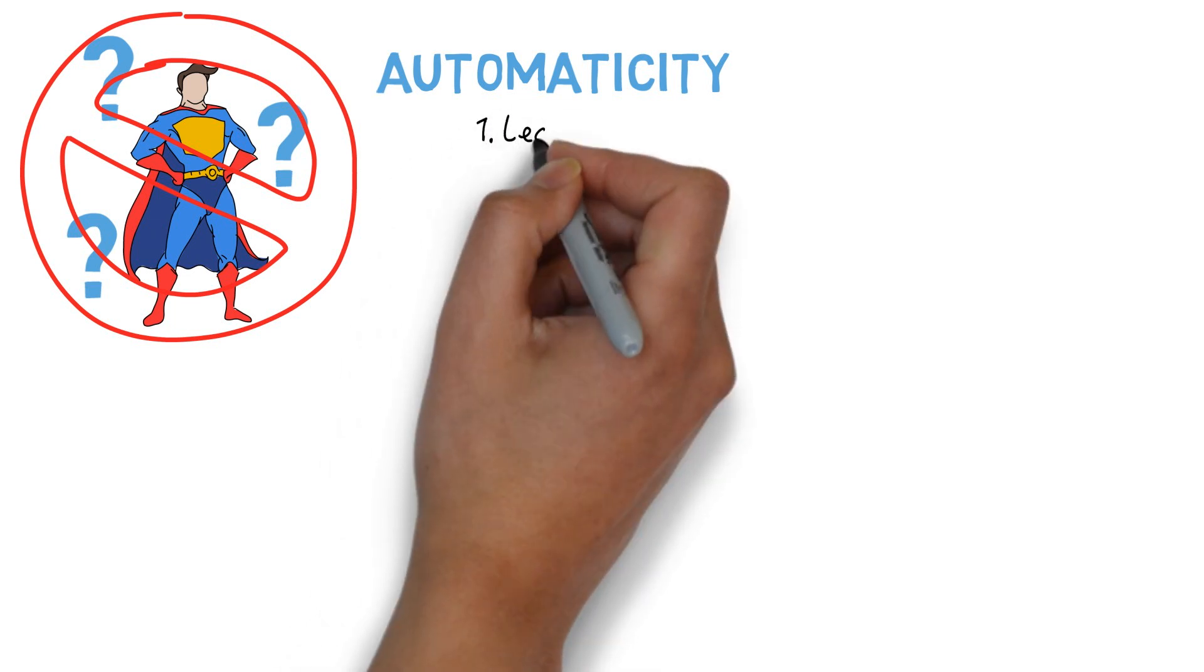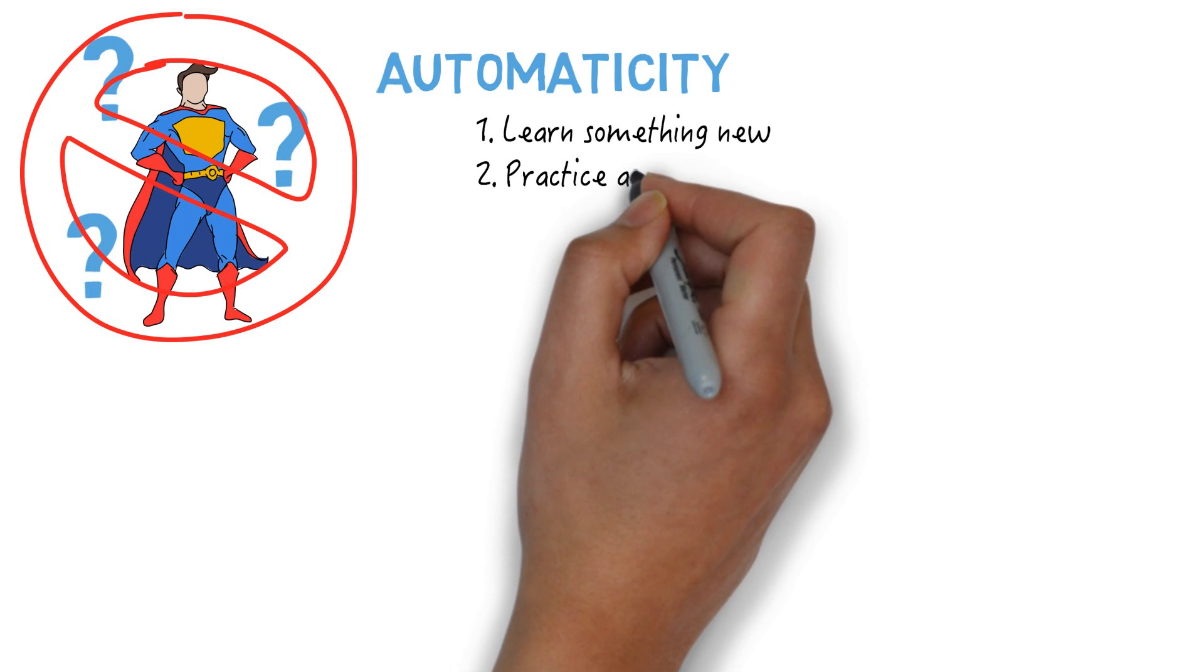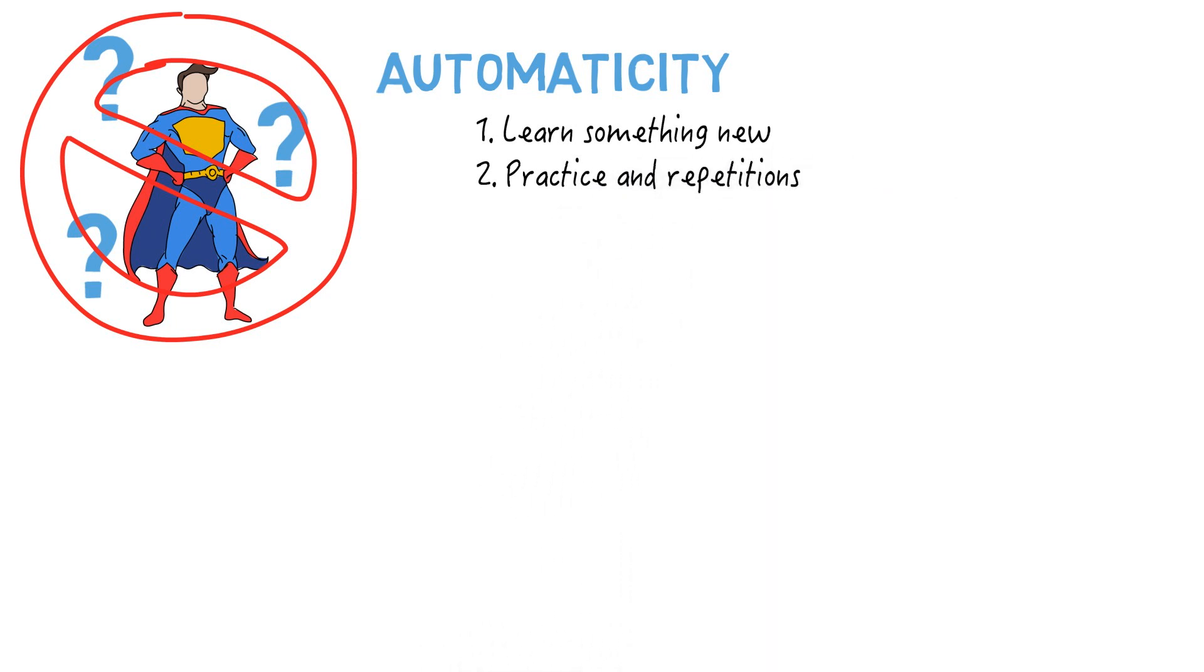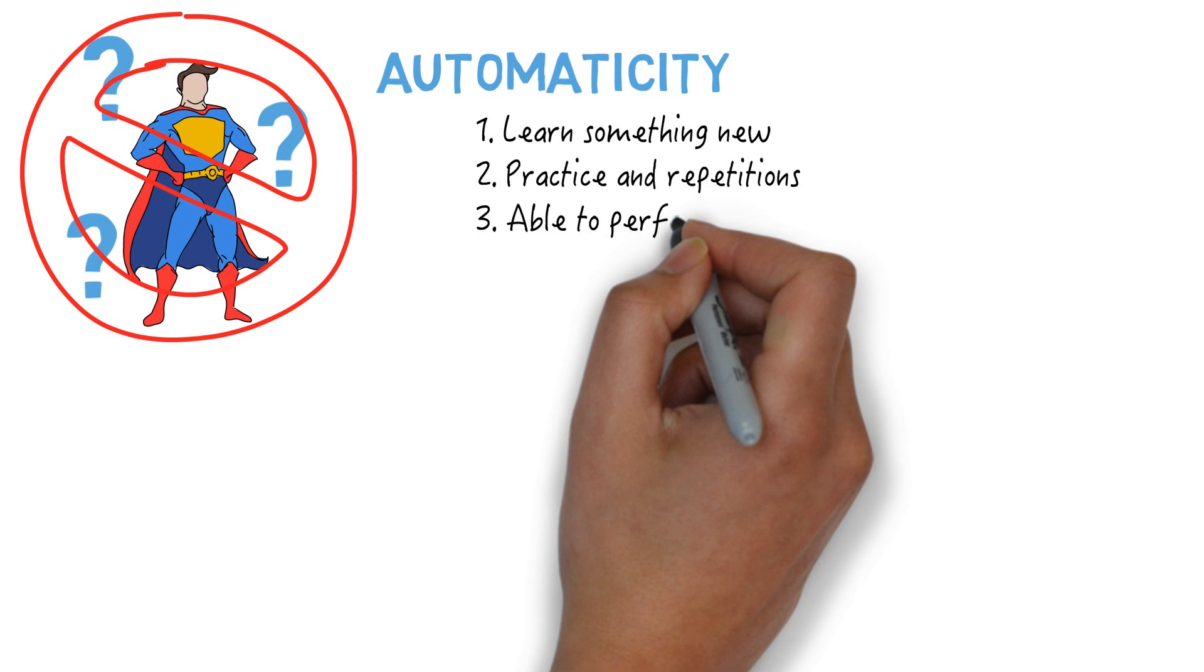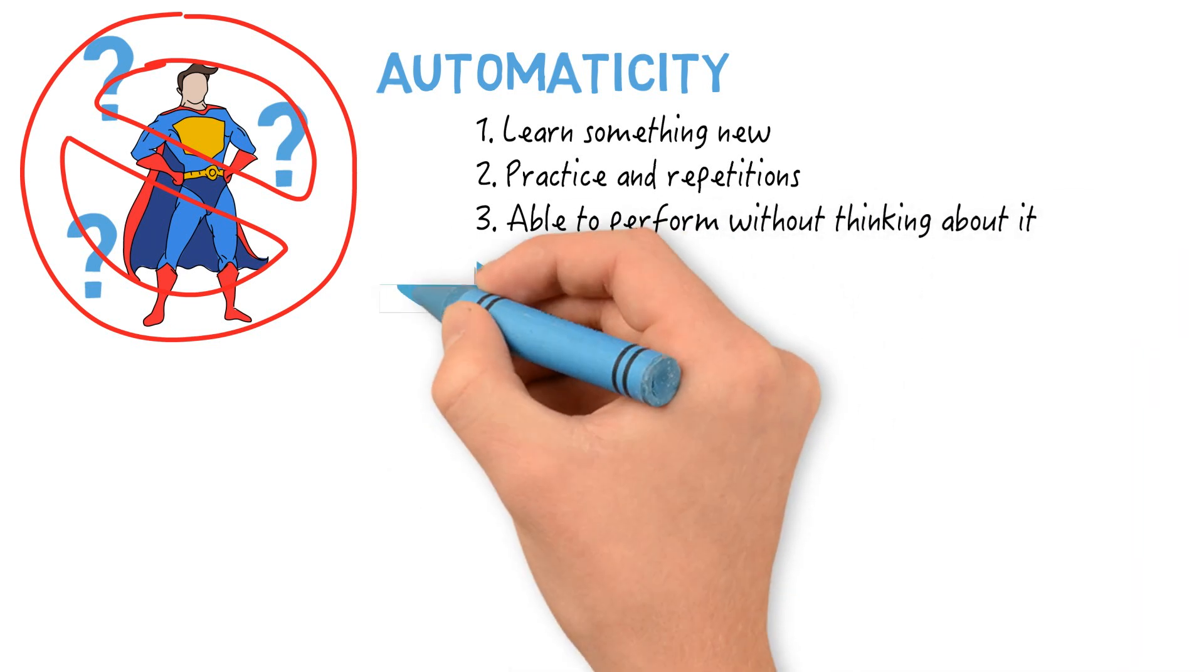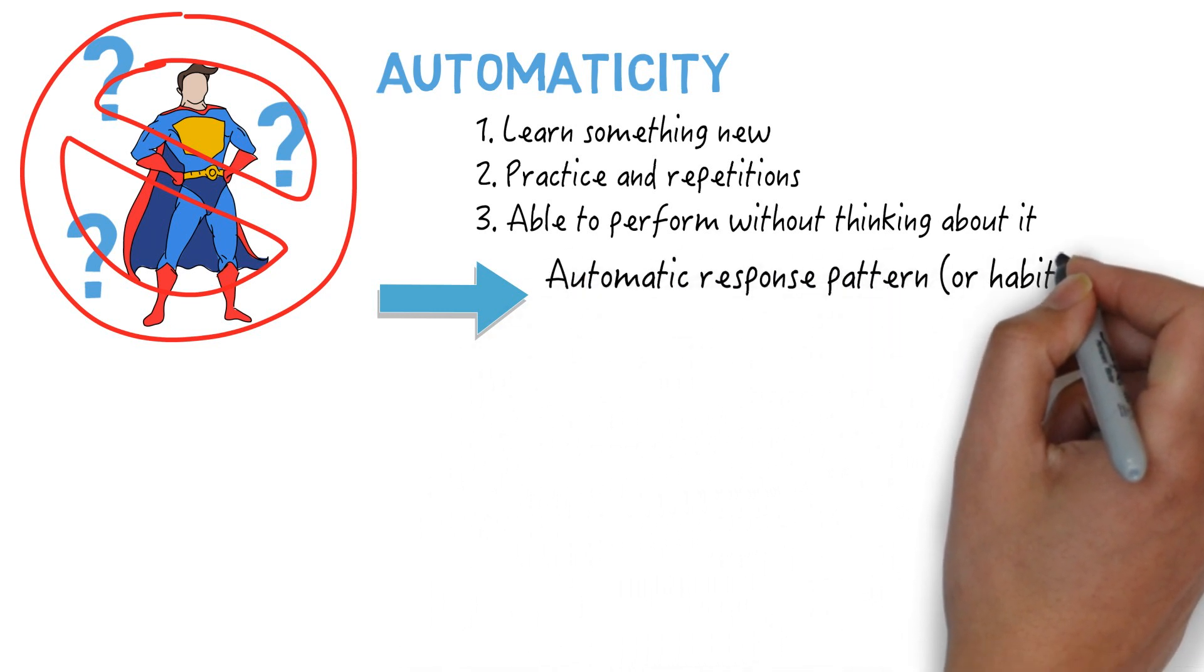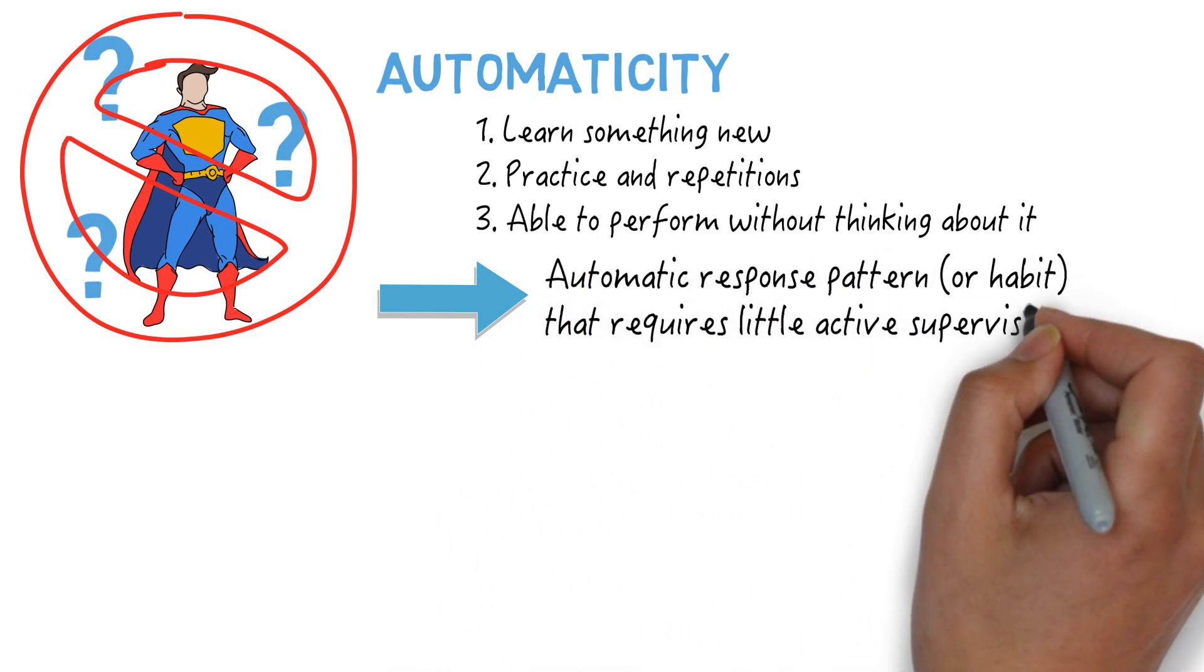The first step consists of learning something new. Then, after enough practice and repetition, we become so familiar with the skill that we are able to perform it without thinking about it. At that point, it becomes an automatic response pattern, or habit, that requires little active supervision.